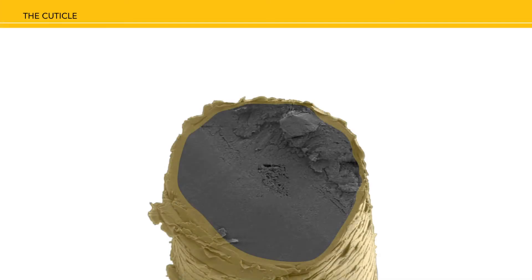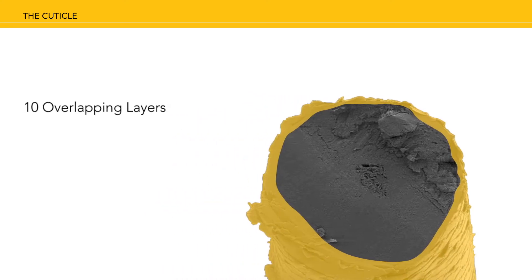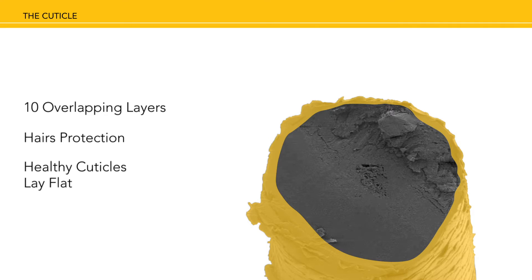In healthy hair, we have 10 overlapping cuticle layers. This is the hair's protection for the inner structures. Healthy cuticles lay flat and smooth, maintaining the hair's moisture and elasticity.